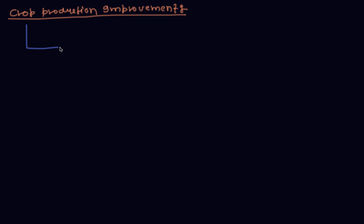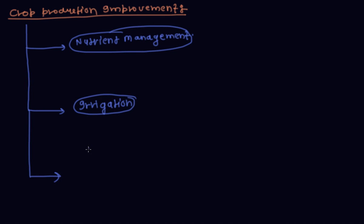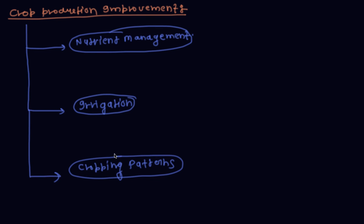Hi friends, today we discuss crop production improvement. Crop production improvement is done by three types. First is nutrient management, second is irrigation, and the last is cropping patterns. These are the three different practices carried out by farmers to achieve a higher standard of crop production.